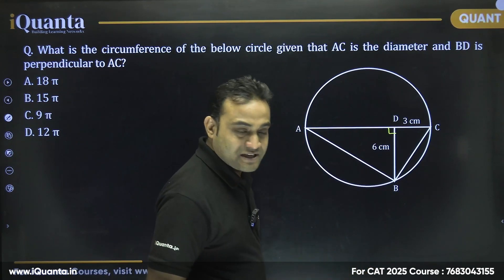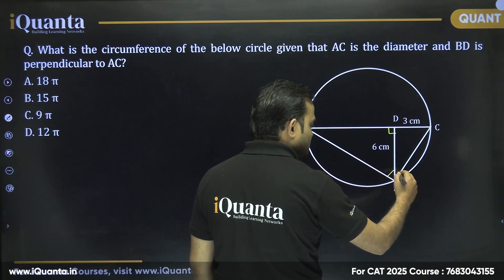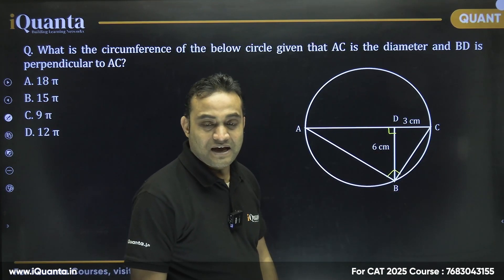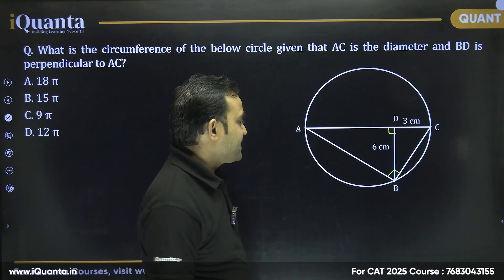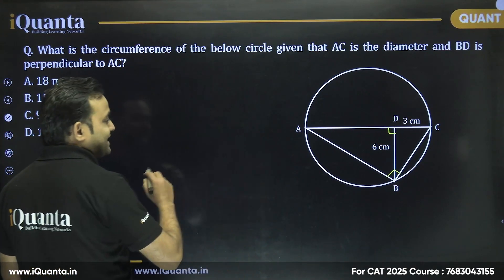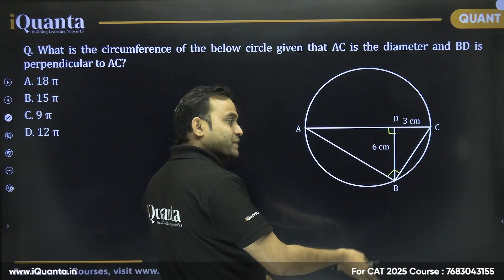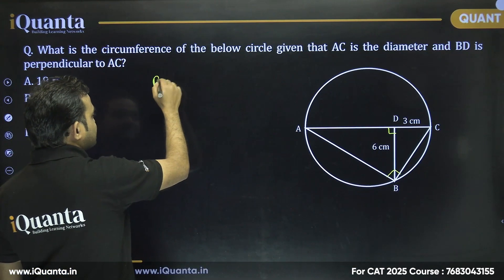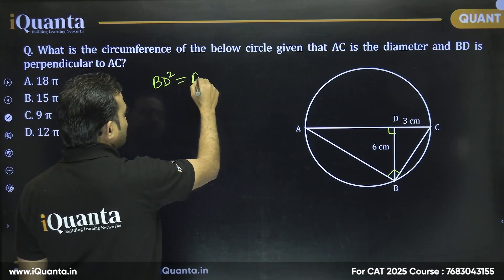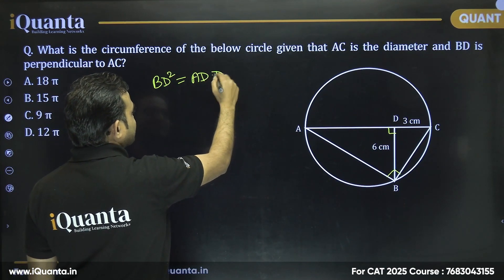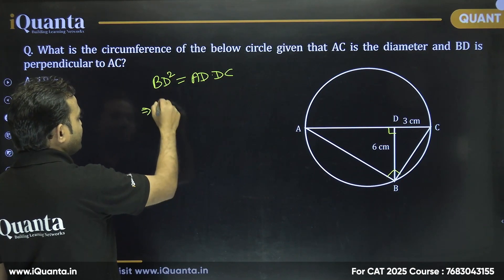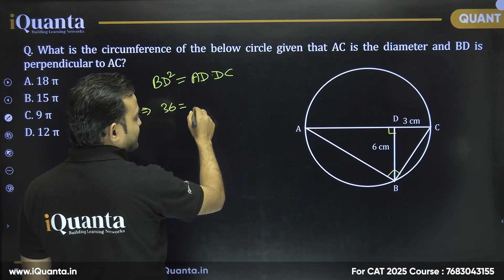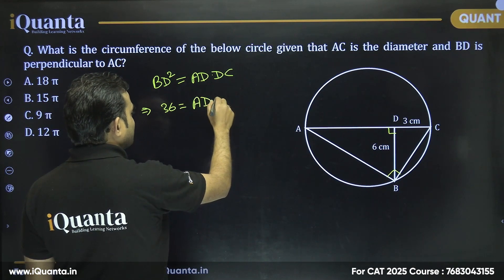Since AC is the diameter, the angle made by AC on the circumference will be 90 degrees, so triangle ABC is a right angle triangle. In any right angle triangle, if BD is the altitude to the hypotenuse, the relation we get is BD² = AD × DC. Here BD is 6, so 6² = 36, CD is 3, and AD is what we need to find.